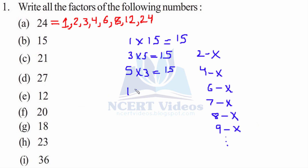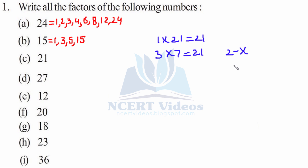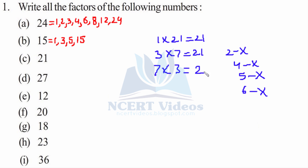We'll check further for 15. Now for 21: 1 into 21 is 21. 2 is not. 3 into 7 is 21. 4 is not, 5 is not, 6 is not. 7 into 3 gives you 21.